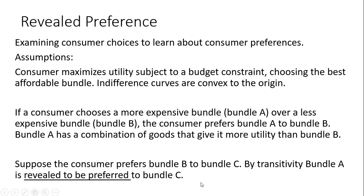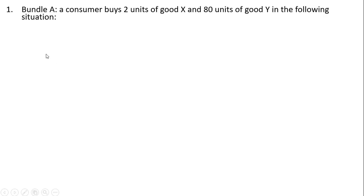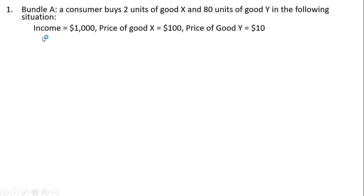Alright, let's start with our examples. In example one, bundle A consists of two units of good X and 80 units of good Y, based on the consumer having an income of $1,000, the price of good X at $100, and the price of good Y at $10.